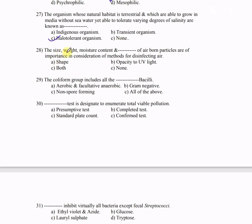Question 28: The size, weight, moisture content, and dash of airborne particles are of importance in consideration of methods for disinfecting air — A) shape, B) opacity to UV light, C) both, D) none. The correct answer is B — opacity to UV light. Question 29: The coliform group includes all dash bacilli — A) aerobic and facultative anaerobic, B) gram-negative, C) non-sporing, D) all of the above. The correct answer is D — all of the above. These are gram-negative, non-sporing, and aerobic and facultatively anaerobic.